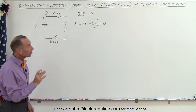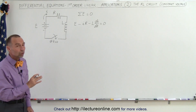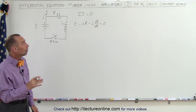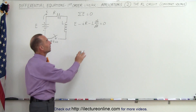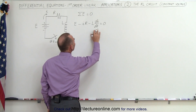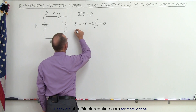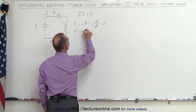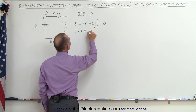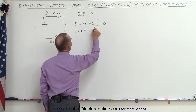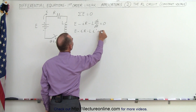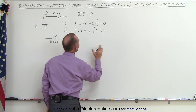Now let's change that equation into standard form. Remember that dI/dt is equal to I prime, so we can say that V minus I times R minus L times I prime is equal to zero.